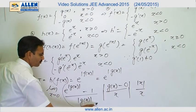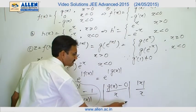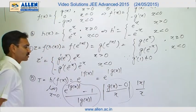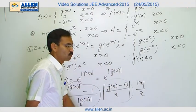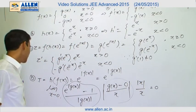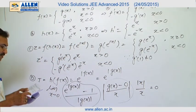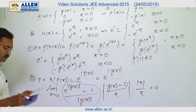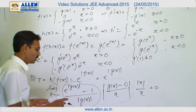Now, this limit will be 1. This limit is g dash 0 which is given as 0 and this is either 1 or minus 1. In both the cases, it will be 0. It means this is existing and your function h fx is differentiable at 0. That is why a and d both the options are correct.